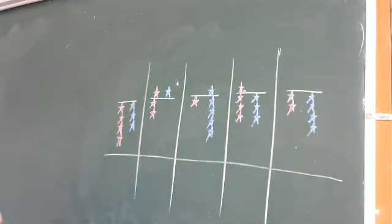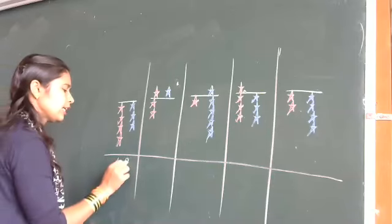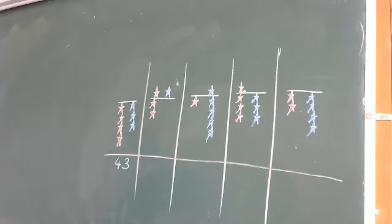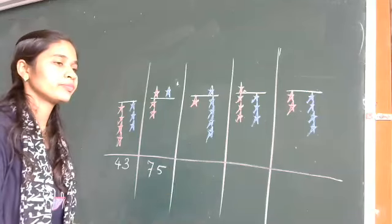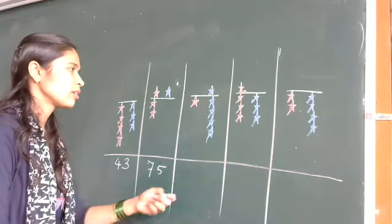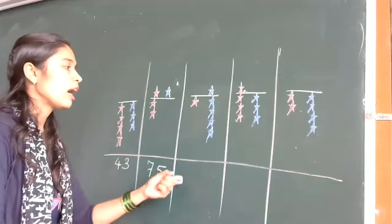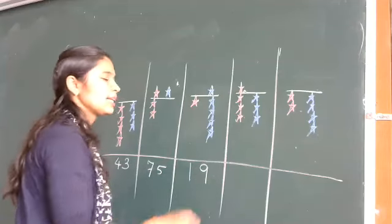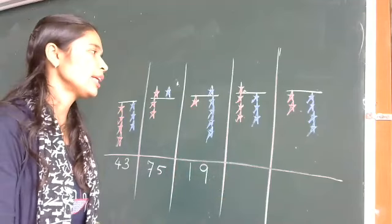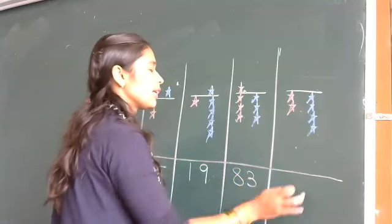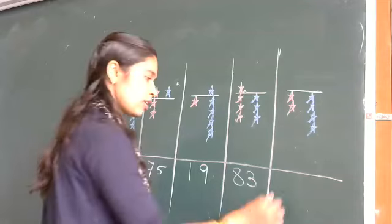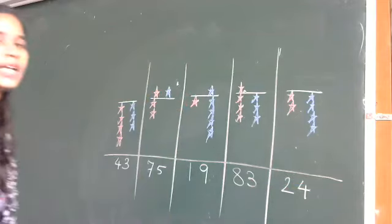What is the first one? How much does it count? 40. What is the next? 75 — correct. Next, it is 90. Correct. Now this one, it is 60. Now the last one, it is 20.